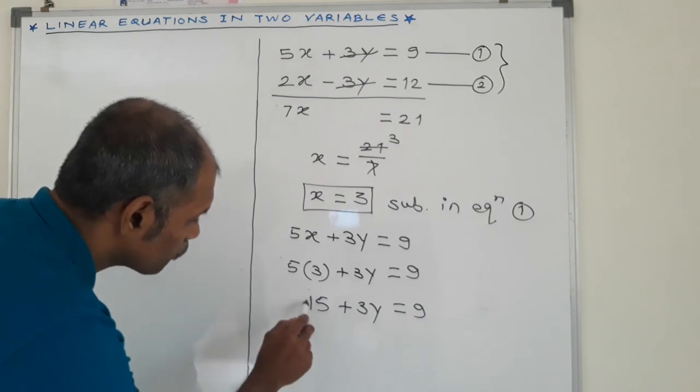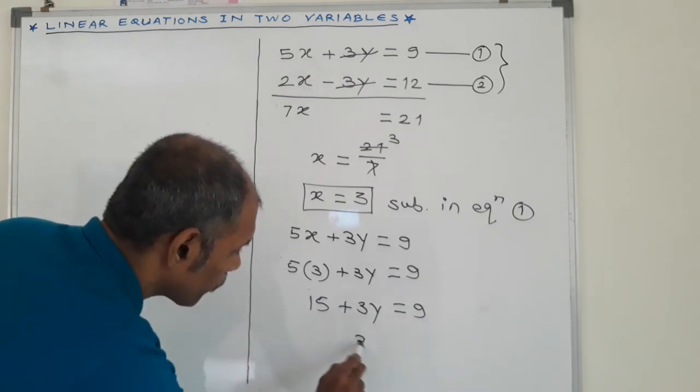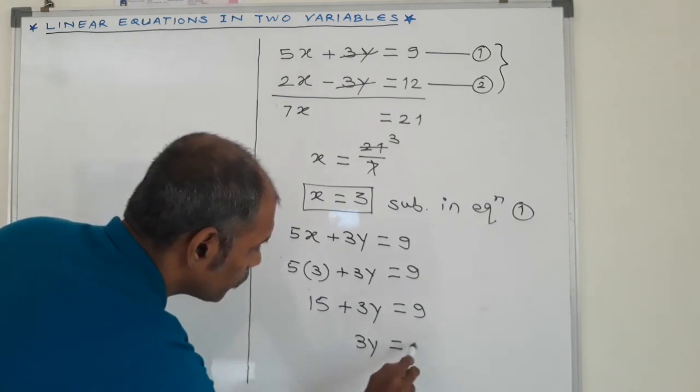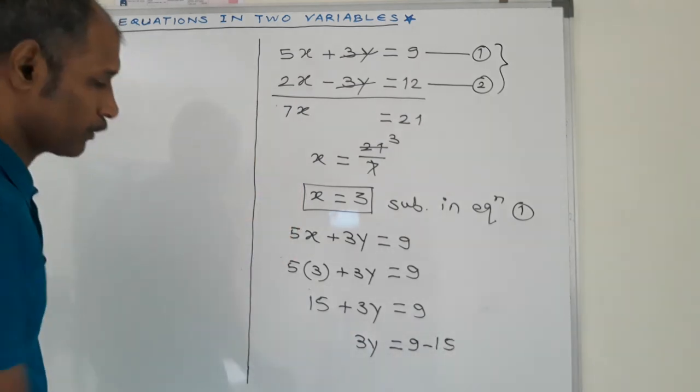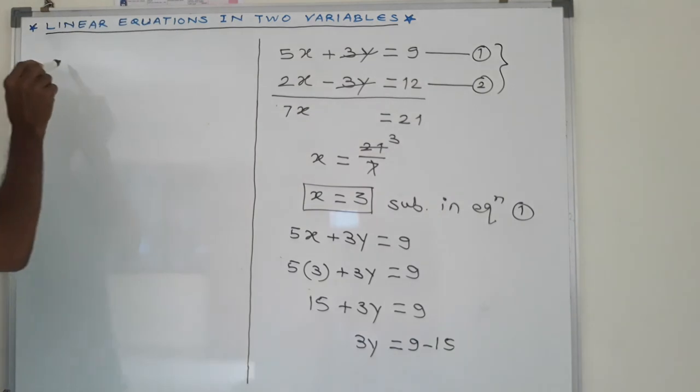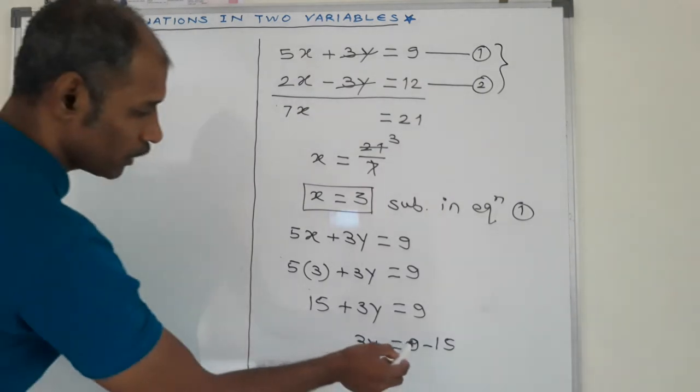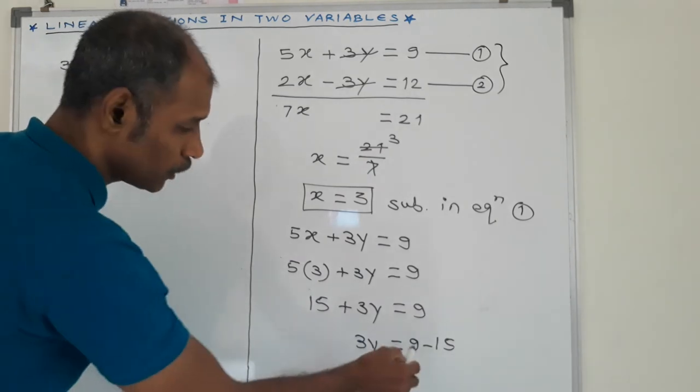We take this 15 to the right side. Therefore, 3y is equal to 9 minus 15. Next step, 3y is equal to, now here, 9 and 15, in these two numbers, 15 is bigger.